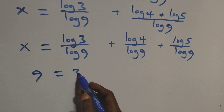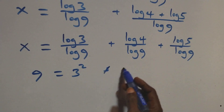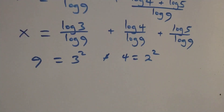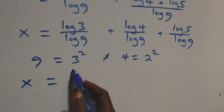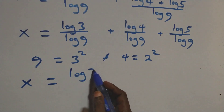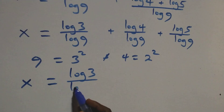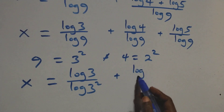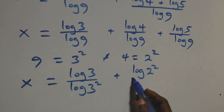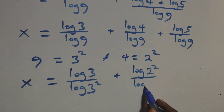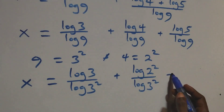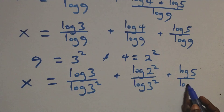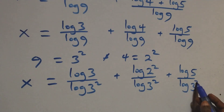We write 9 as 3² and 4 as 2², so this becomes x = log(3)/log(3²) + log(2²)/log(3²) + log(5)/log(3²).